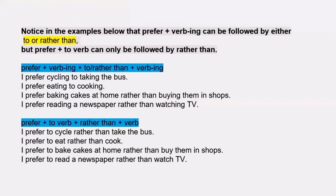I prefer cycling to taking the bus. First, we have understood a structure: 'I prefer cycling' and 'I prefer to cycle.' We have understood two structures that we can also use with ING, as well as we can use ING with 'to.'